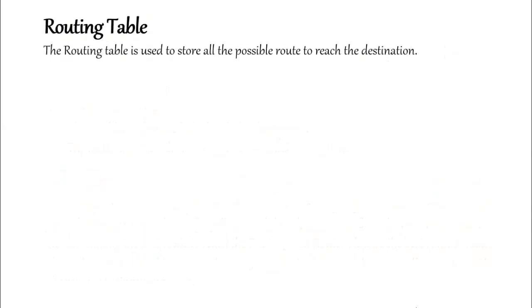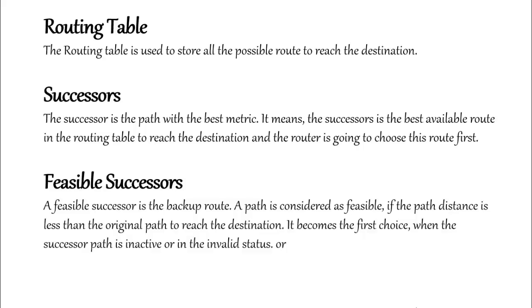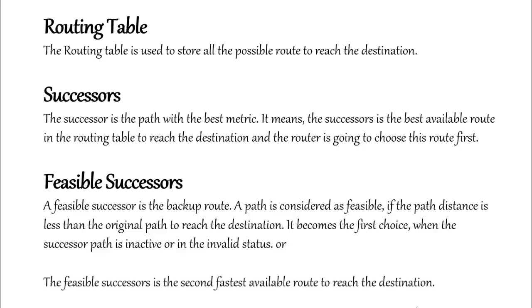The routing table is used to store all possible routes to reach the destination — that is its main function. Next is the successor: the successor is the path with the best metric, meaning the best available route in the routing table to reach the destination, and the router will choose this route first. The feasible successor is the backup route. A path is considered feasible if its path distance is less than the original path to reach the destination. It becomes the first choice when the successor path is inactive or invalid — it is the second-fastest available route to reach the destination.